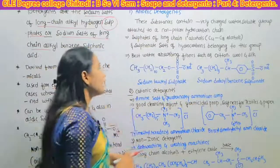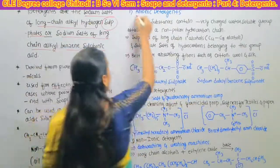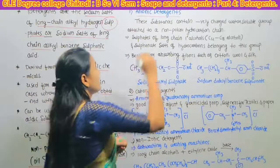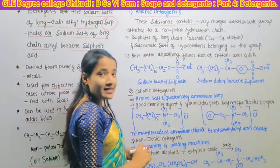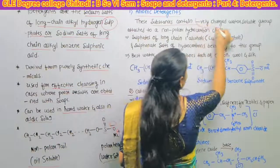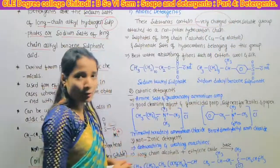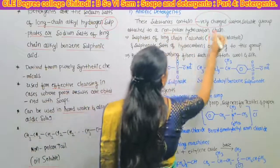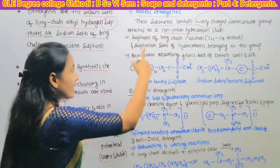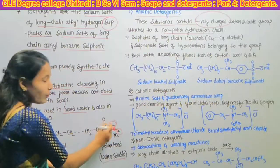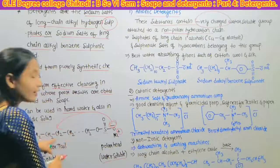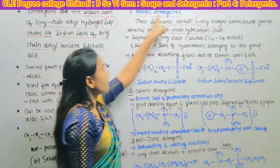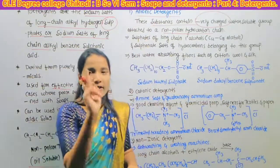Let's see them one by one. First, anionic detergents. These substances contain a negatively charged water soluble group attached to a non-polar hydrocarbon chain. This is what we call an anionic detergent.